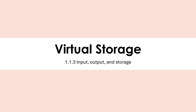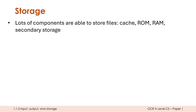Let's have a look at virtual storage now. In a computer we've got an annoying amount of different storage devices, and the difference between storage and memory is always a little bit wishy-washy in computer science. Essentially we've got loads of components which are able to store files either permanently or short term if it's volatile: cache, ROM, RAM and secondary storage. Our three types of secondary storage are optical, magnetic and flash. Virtual storage isn't a fourth type - it just utilizes these in a different way.